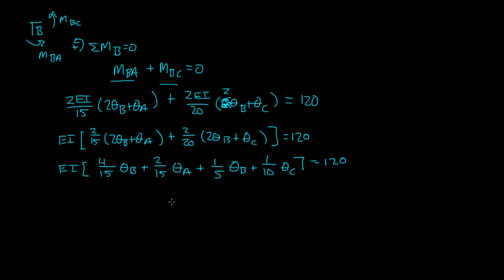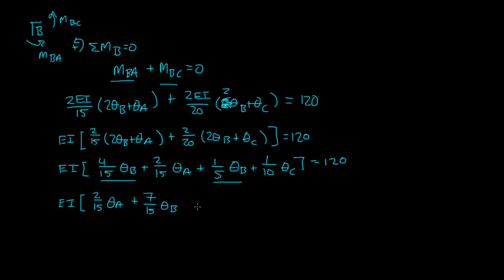Now I'm going to combine like terms, writing them in order: θ_A, θ_B, θ_C, θ_D. There are two θ_B terms. So I get 2/15 θ_A plus — adding 4/15 and 1/5 gives 7/15 — so 7/15 θ_B plus 1/10 θ_C, and there's no θ_D so I write 0 θ_D, equal to 120. This is equation 1.